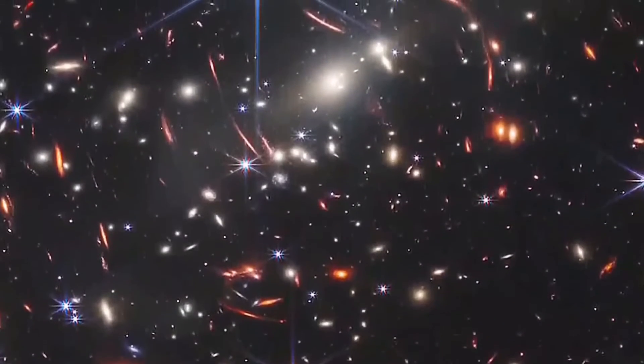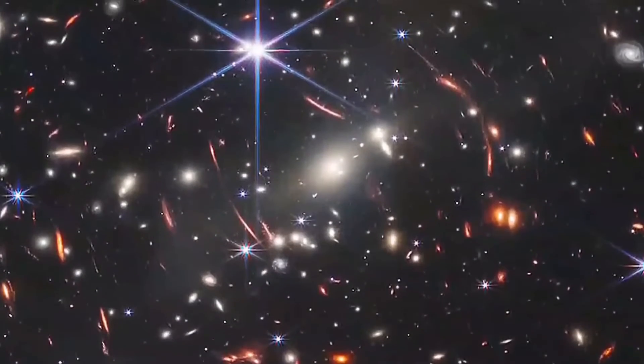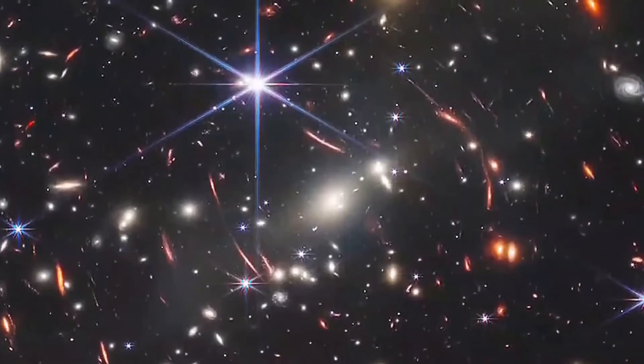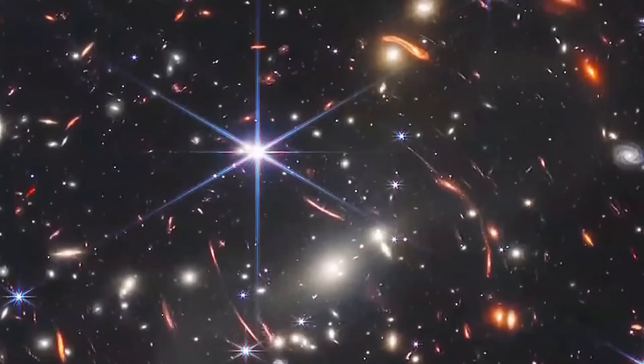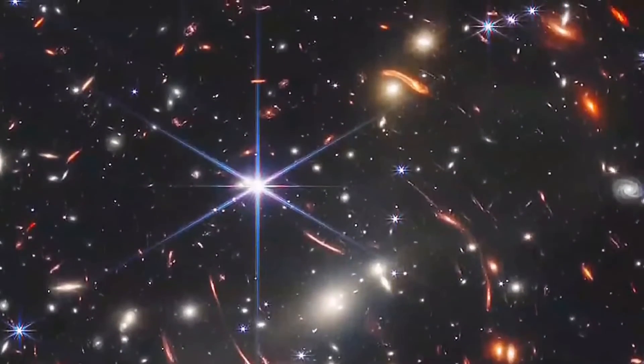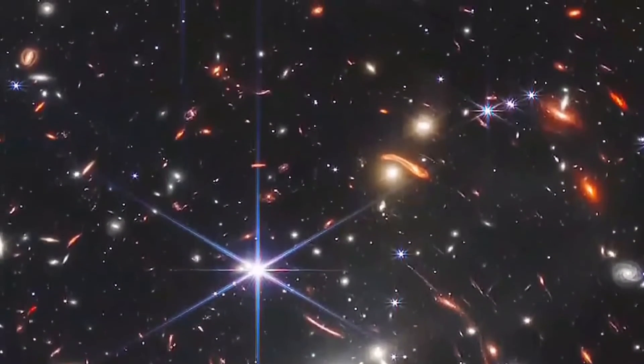Thousands of galaxies, including the faintest objects ever observed in the infrared, have appeared in Webb's view for the first time. This slice of the vast universe covers a patch of sky approximately the size of a grain of sand held at arm's length by someone on the ground.